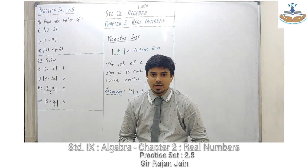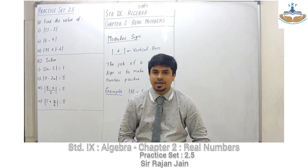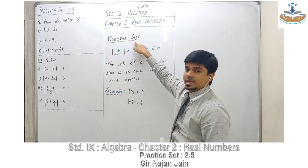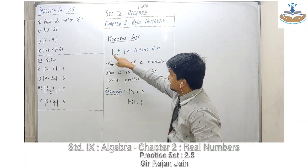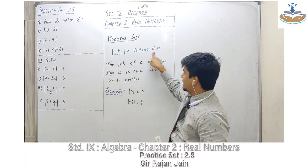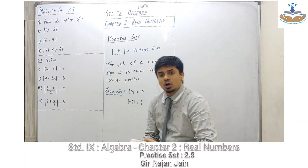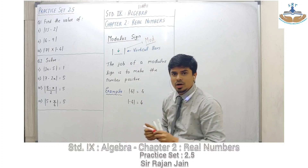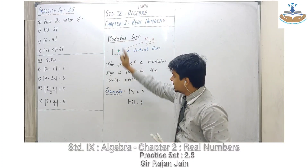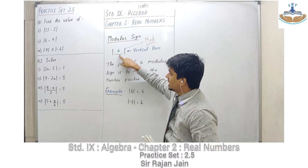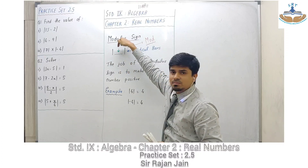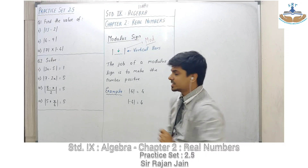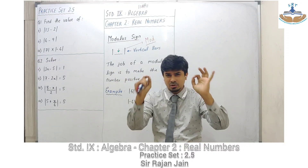Practice Set 2.5 is the easiest exercise in the entire chapter. It is based on a new concept called the modulus sign. The vertical bars I've written — that is nothing but the modulus sign, also called 'mod'. The modulus sign operates on a number placed inside those vertical bars. The job of a modulus sign is to make the number positive.